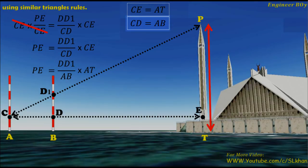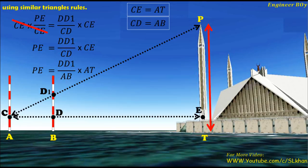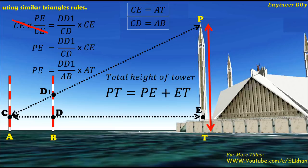From this PE is calculated, and then ET is measured using the tape. So we can have the total height of the tower is PE plus ET. And that's it.